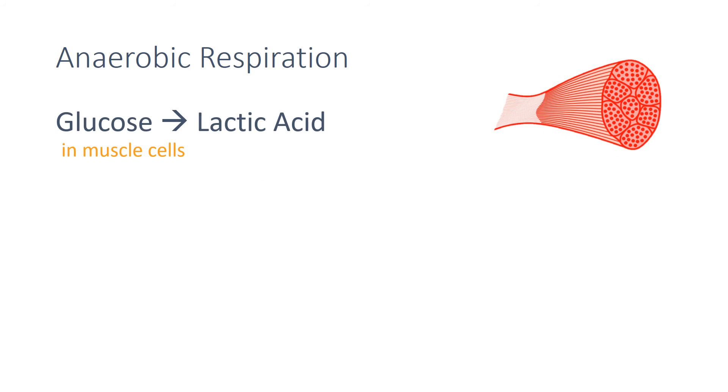In the muscle cells of animals, the word equation for anaerobic respiration is simply the breakdown of glucose into lactic acid.